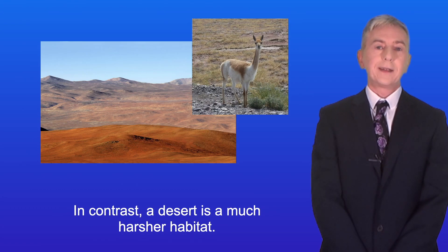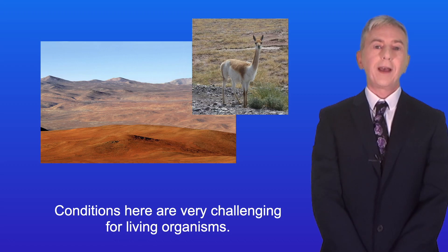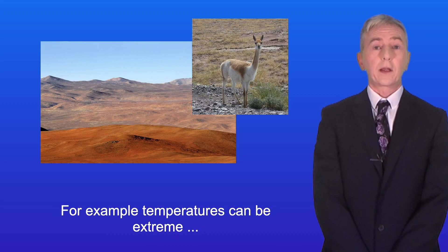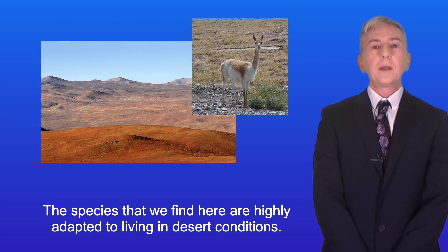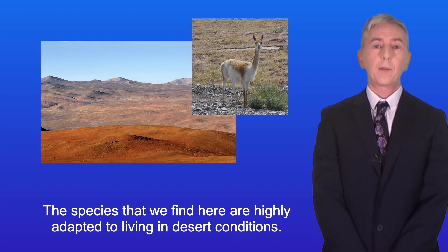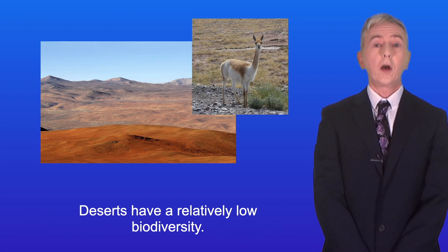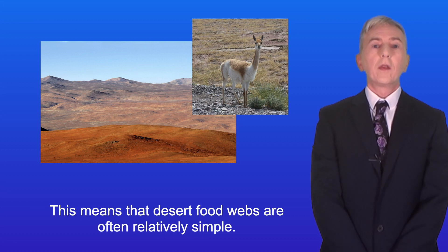In contrast, a desert is a much harsher habitat. Conditions here are very challenging for living organisms. For example, temperatures can be extreme and there are few sources of water. The species that we find here are highly adapted to living in desert conditions. And deserts have a relatively low biodiversity. This means that desert food webs are often relatively simple.